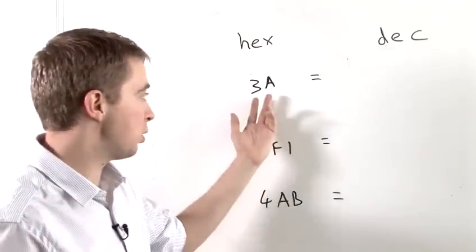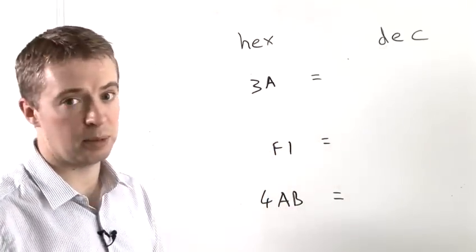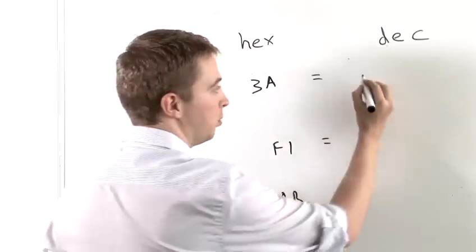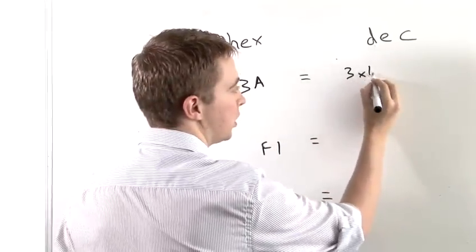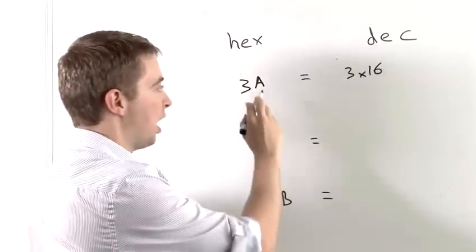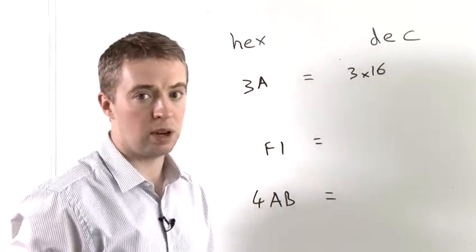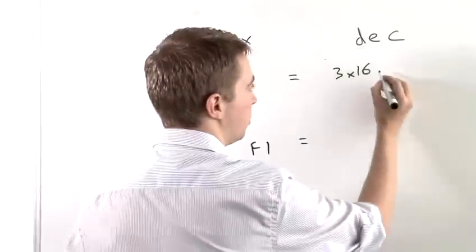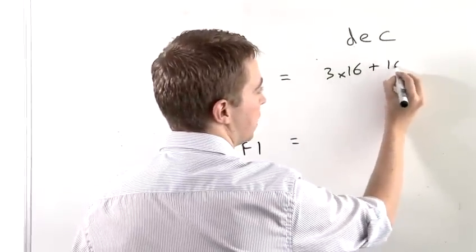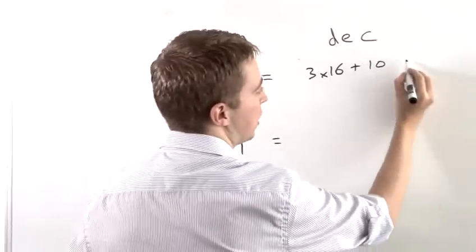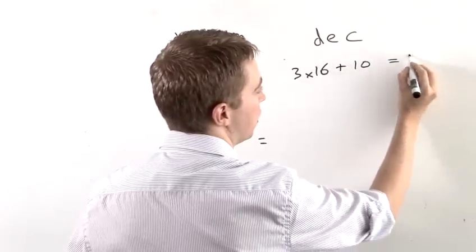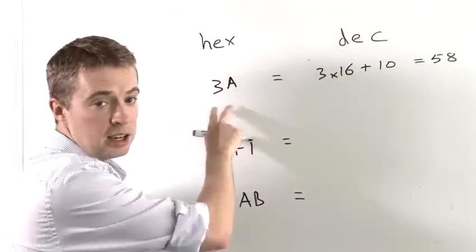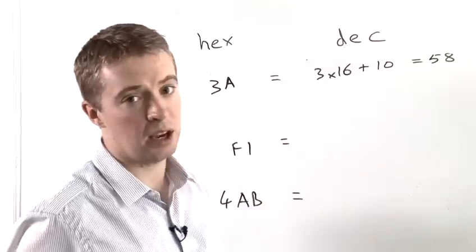So let's look at how to convert 3A into a decimal number. We have 3 in the 16s column, so we're going to say 3 times 16. And we have A in the units column. Now A represents the number 10 in hexadecimal. So that's adding 10. And 3 times 16 plus 10 is equal to 58. So the number 3A in hexadecimal is equal to 58 in decimal.